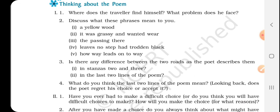Question two of the first part: discuss what these phrases mean to you. You simply have to tell the meaning of these phrases. The first is 'a yellow wood' — when you read the line 'a yellow wood,' what did you understand? The next is 'it was grassy and wanted wear.' Grassy means there was a lot of grass on it, and 'wanted wear' we have just covered — so I hope this is clear to you.